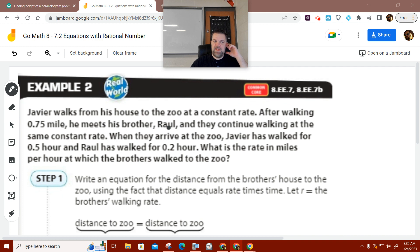So this one, it says Javier walks from his house to the zoo at a constant rate. Constant rate is a clue for a linear equation, right? When they say constant rate, they mean a linear equation. What's the formula for a linear equation? Y equals MX plus B.